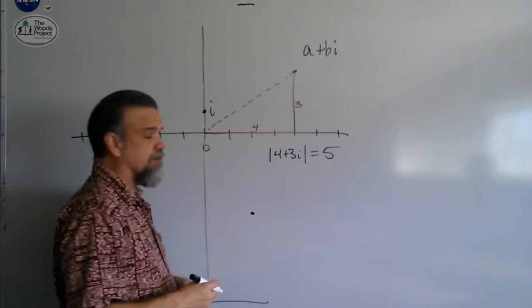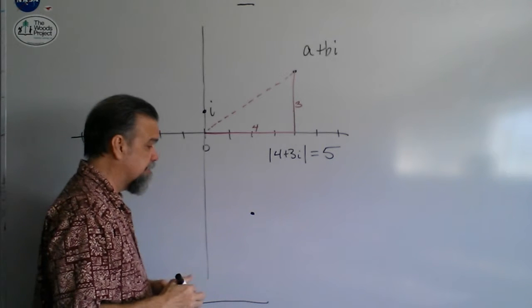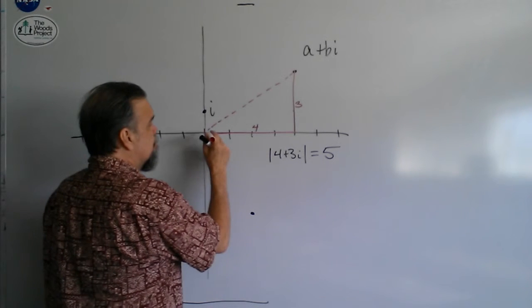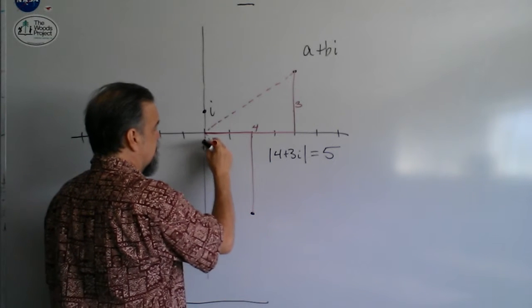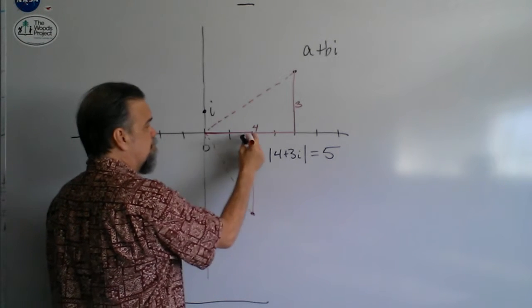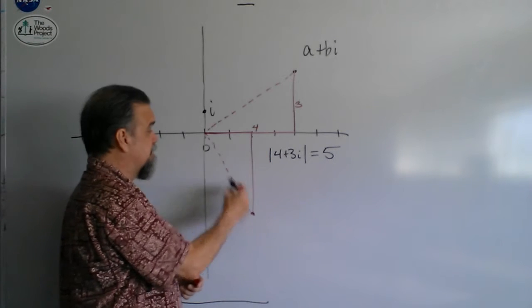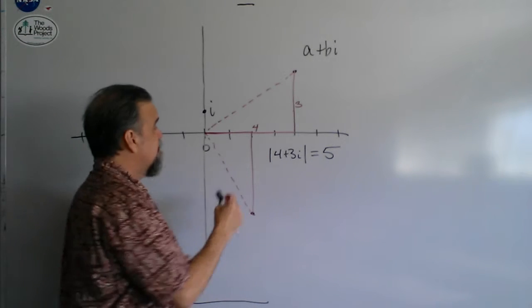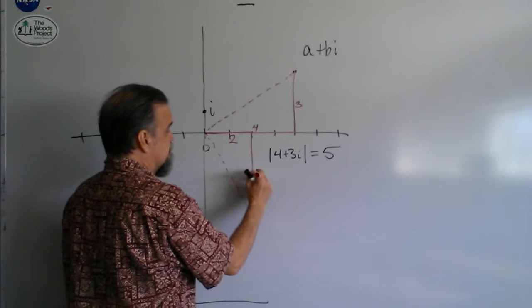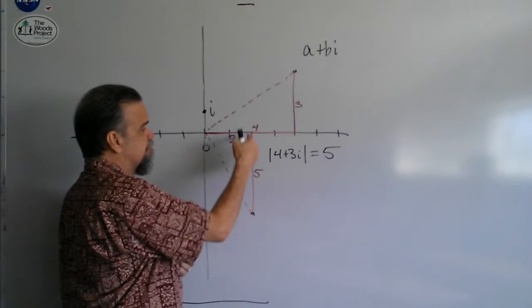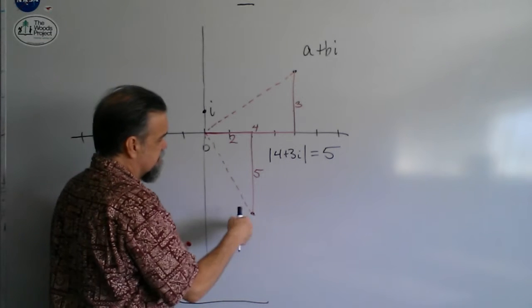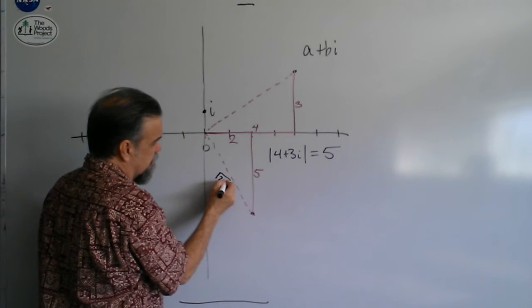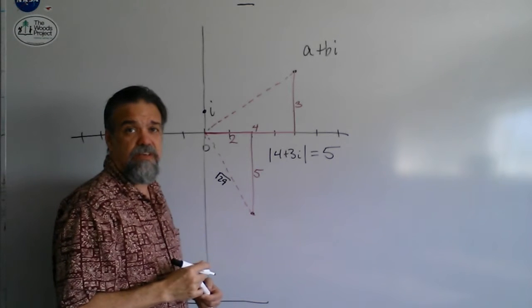What about this one down here? This was 2 minus 5i. If I do this, well, then I'm going to draw a triangle like this that's going to have 2 on this side and 5 on this side, and I'm not sure what on this side. Well, let's see. If this is 2 and this is 5, and that means I'm going to have 2 squared is 4, 5 squared is 25.